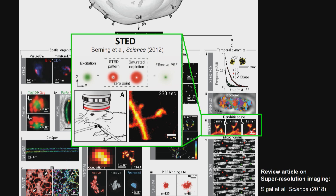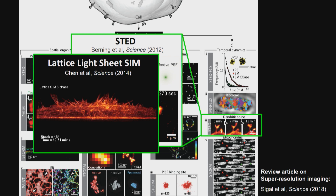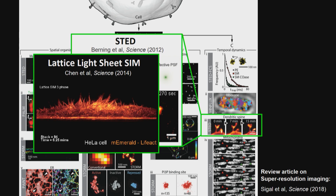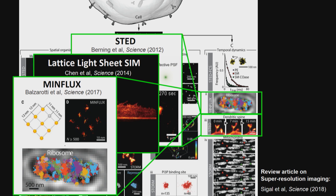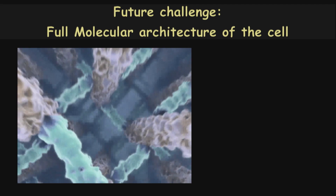Here are some of these other approaches. This is STED work from Stephan Hell's lab showing that you can actually look into the living mouse brain to see dendritic spines. Here is a lattice light-sheet SIM method that is very good at achieving high time resolution and low damage for imaging. And then there is a new MINFLUX method developed by Stephan Hell's lab to get to actually single-digit nanometer — one to two nanometer — resolution, so that you can really see molecular interactions at a very fine scale.